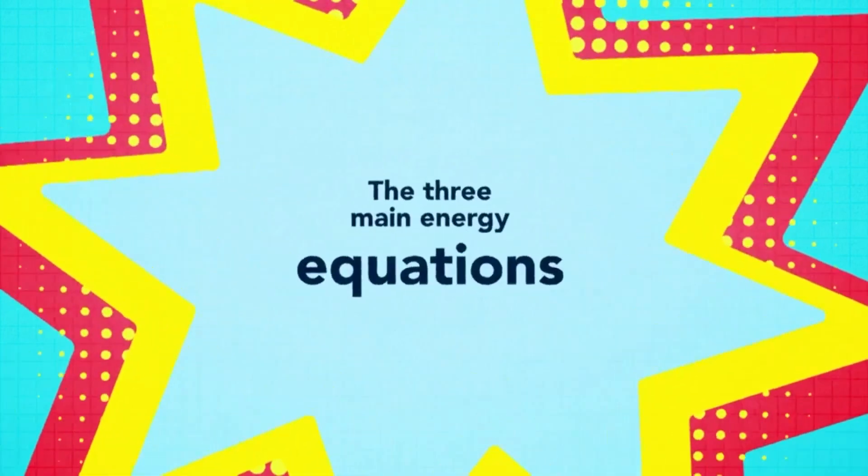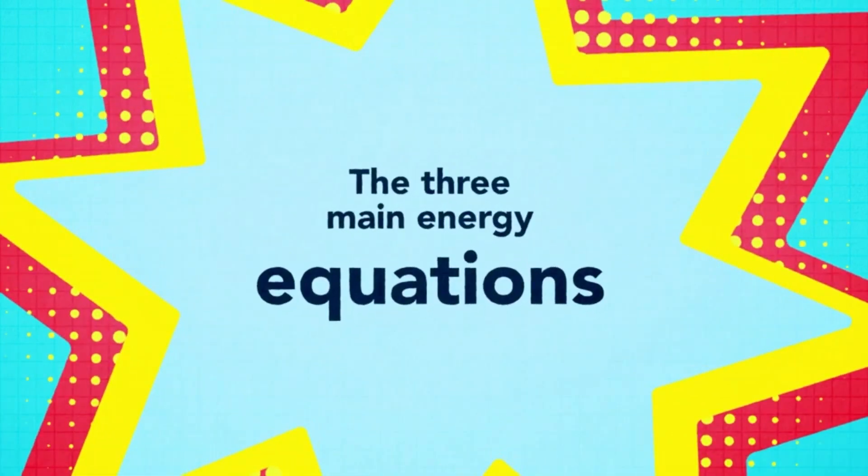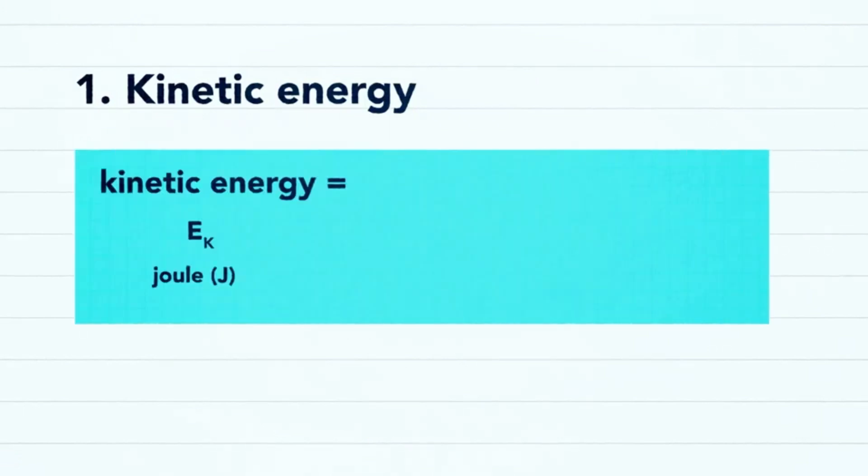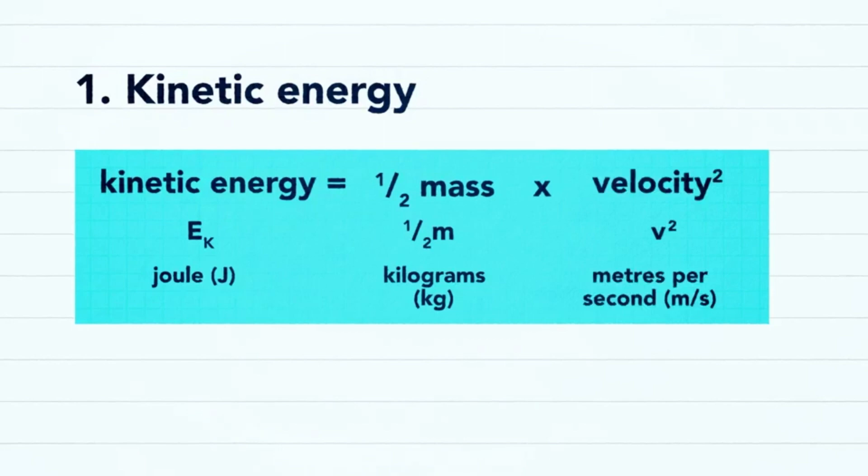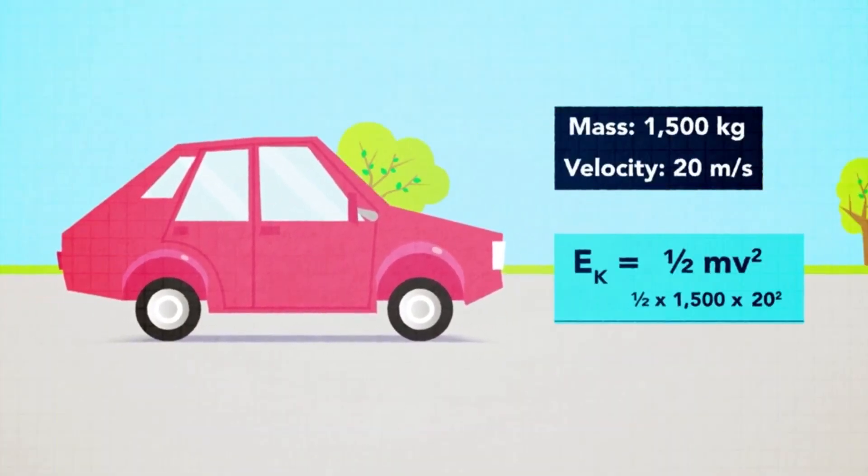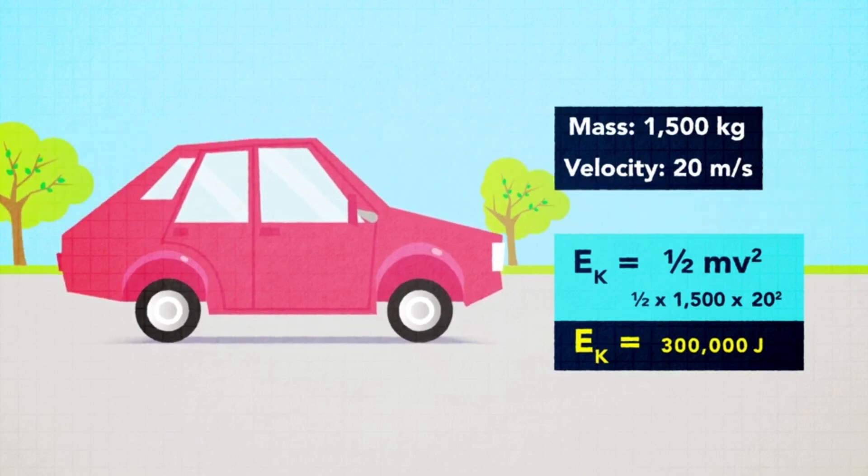When it comes to energy there are three main equations that we need to understand and remember. The first allows us to calculate kinetic energy, the energy stored by a moving object. Kinetic energy equals half of the mass of an object multiplied by the square of its velocity. Because the velocity is squared in the equation it has a huge impact on the total amount of kinetic energy.